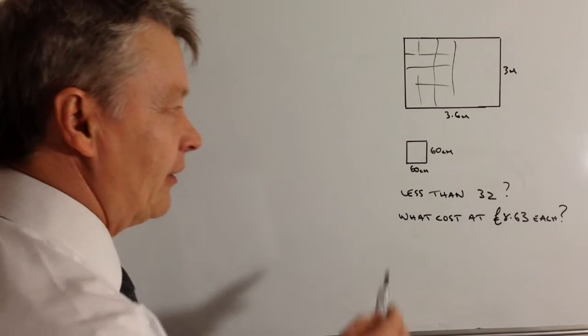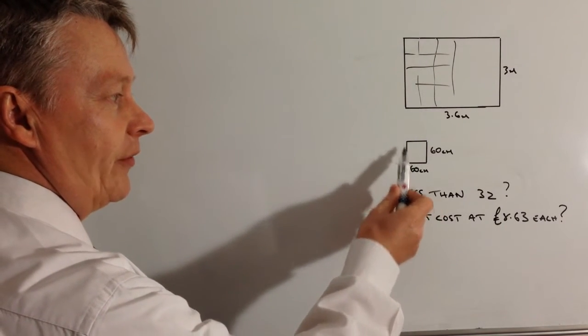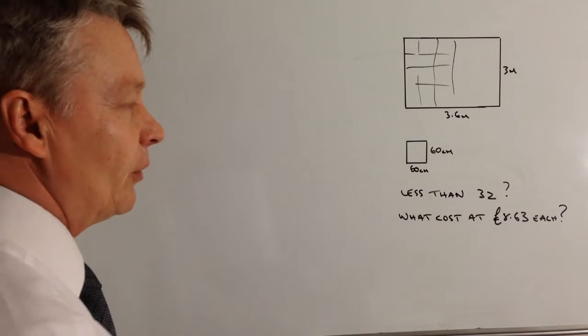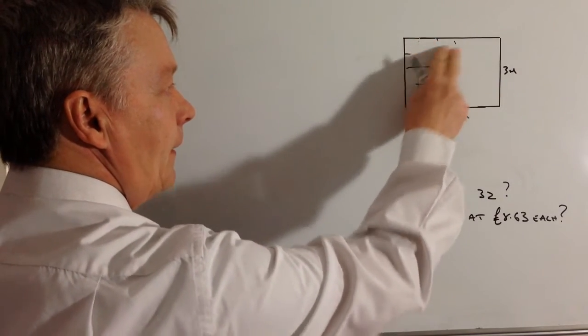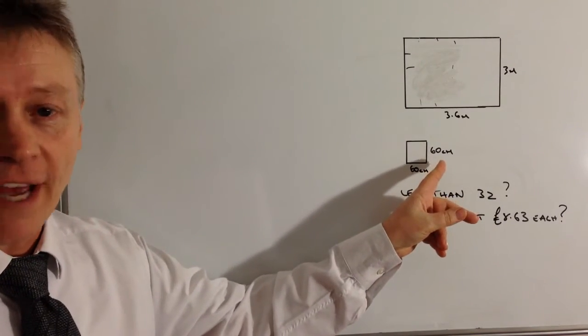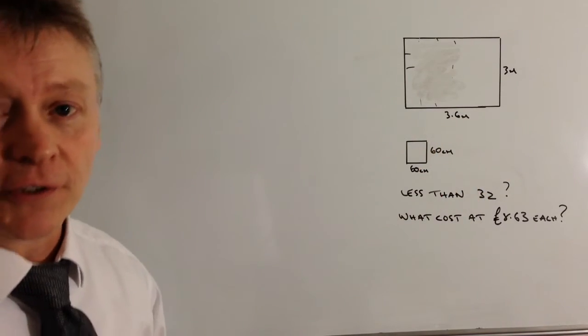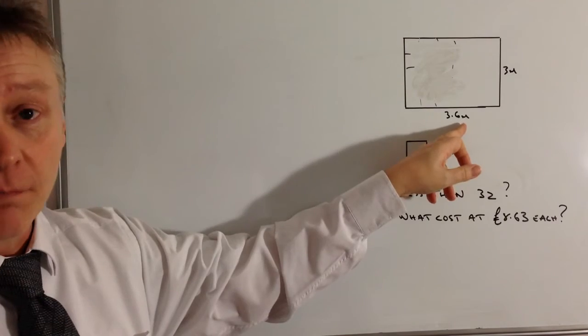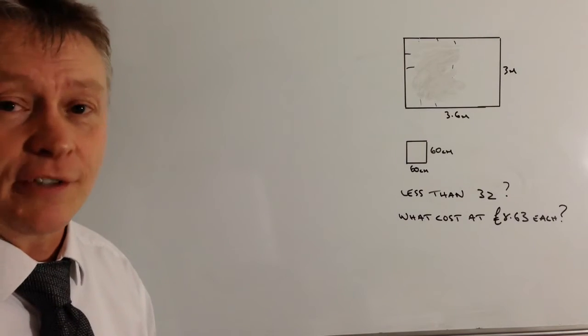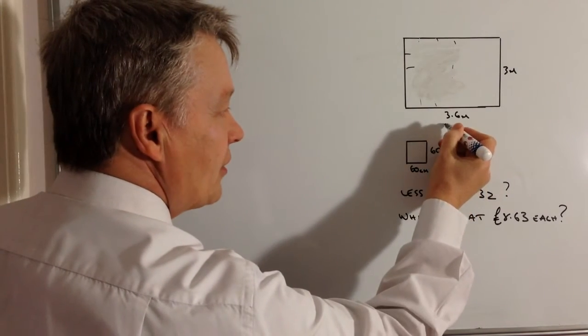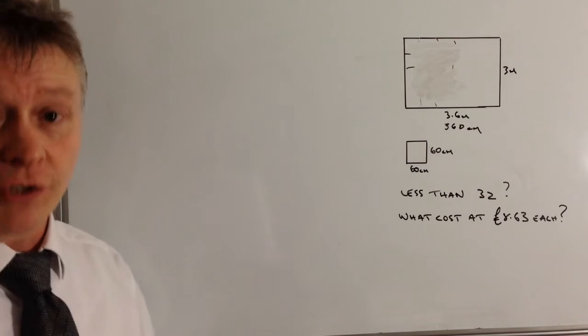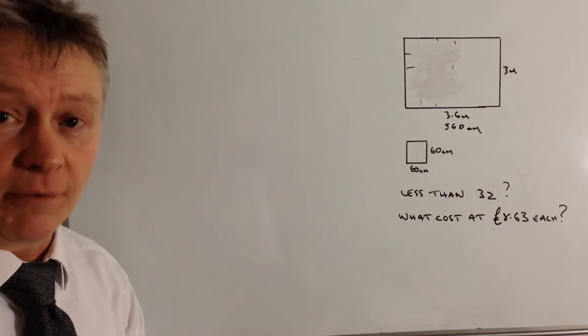Okay, so the first thing is we need to figure out whether he has enough paving slabs if he's got 32 of them. If I've got along the bottom here 3.6 metres and I need to figure out how many will fit along the bottom, the difficulty we've got is that this is centimetres and this is metres. So I'm going to convert both of them to centimetres. Along the bottom here I'm going to convert that to 360 centimetres. So now I've got two measurements both in the same units that I can use.